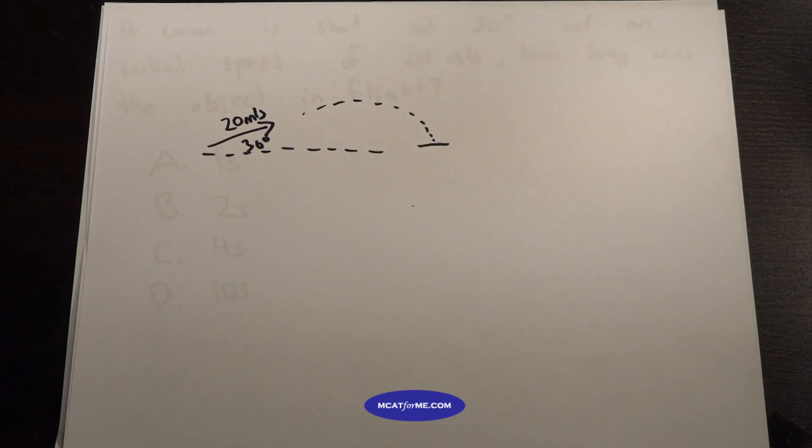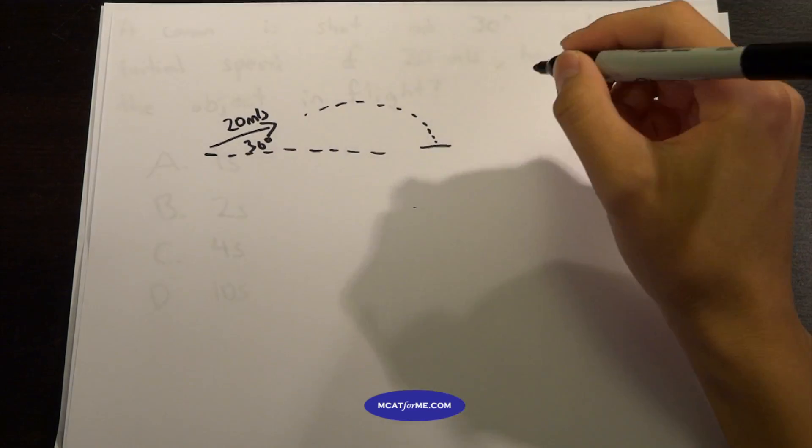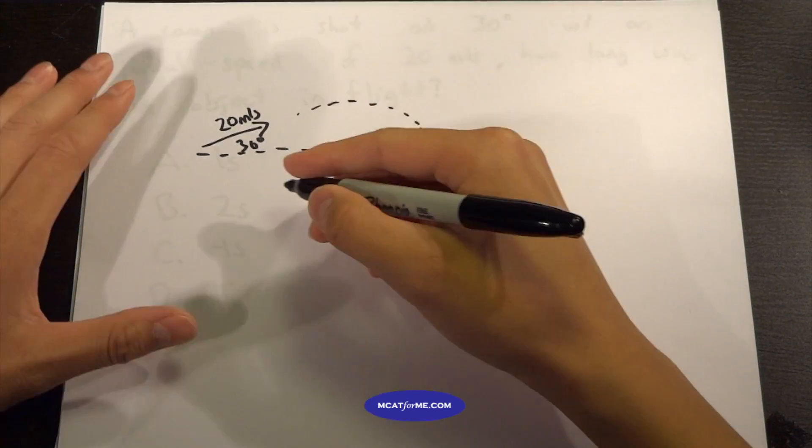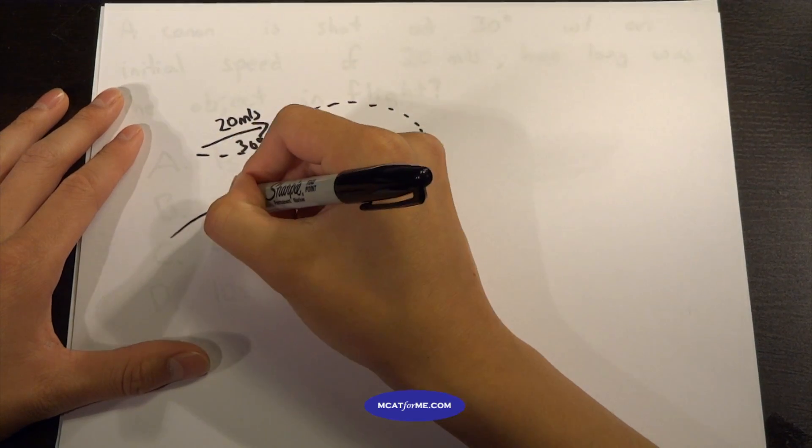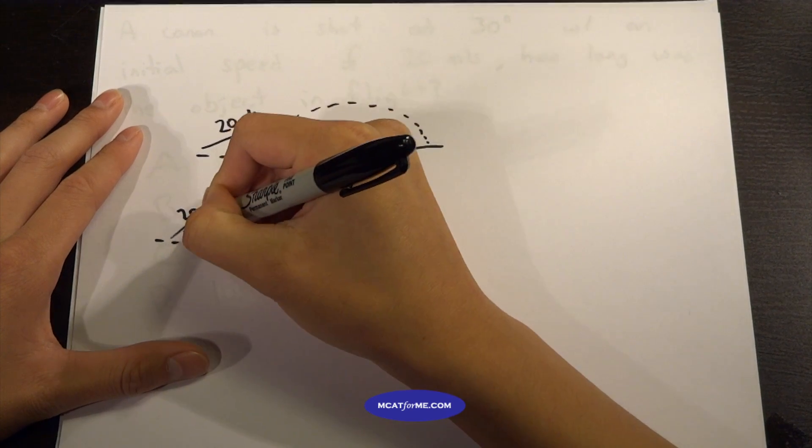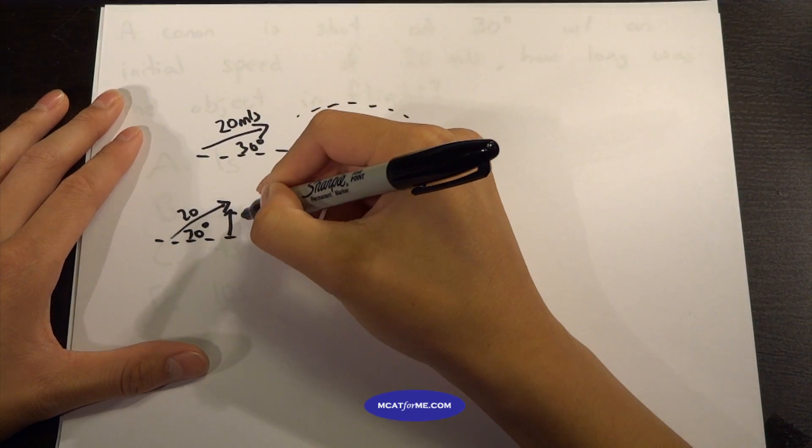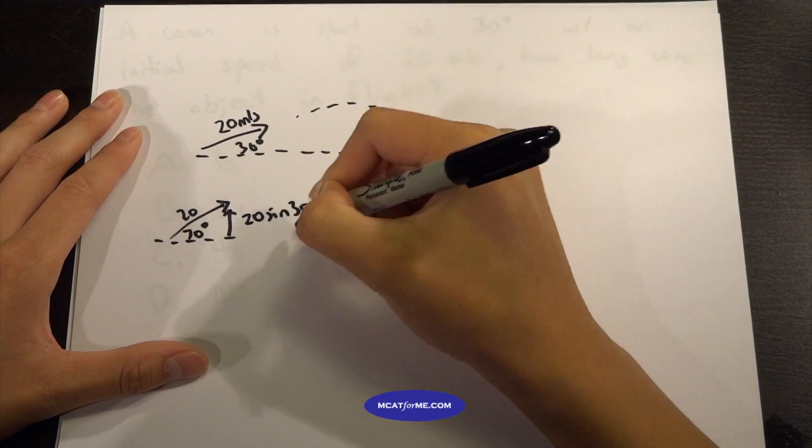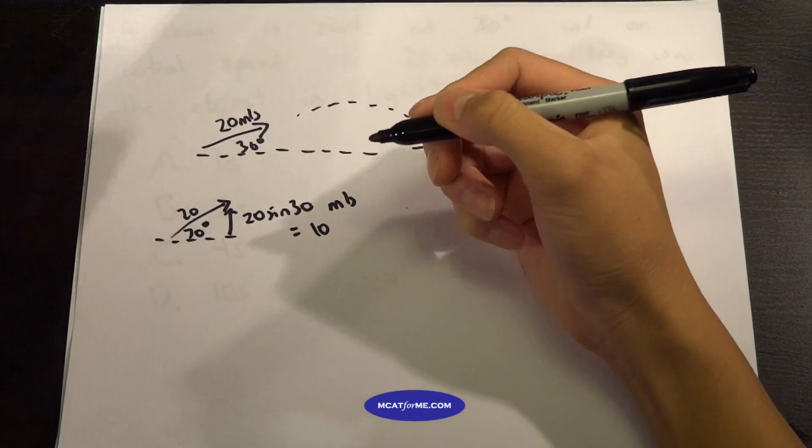So the one thing that we can do for these projectile motion questions is split them into components. All that we really care about for this question is the vertical component. So if we have 20 meters per second at 30 degrees, we know that this has to be 20 sin 30 meters per second, which is the same as 10 because sin 30 is one half.